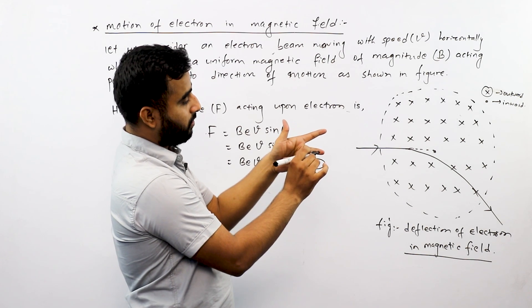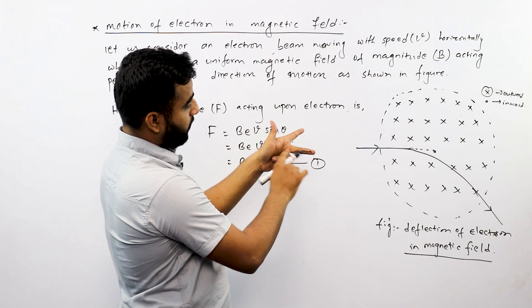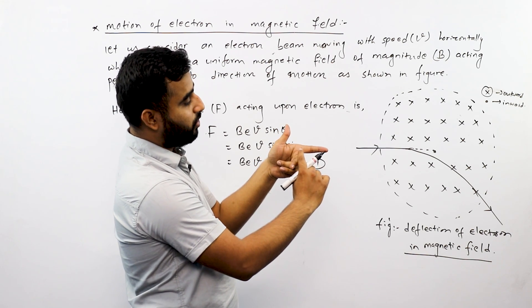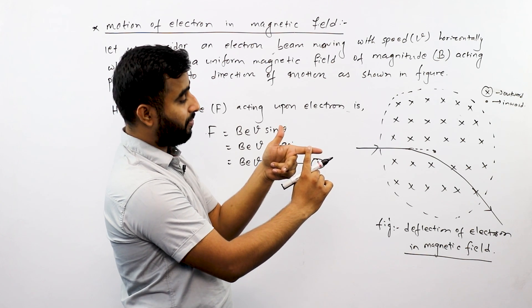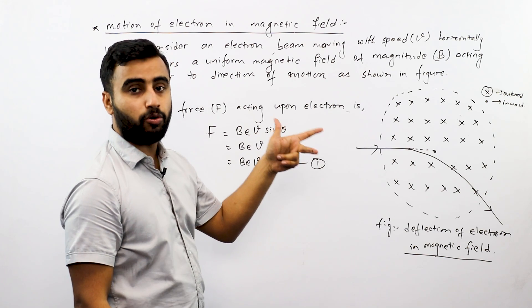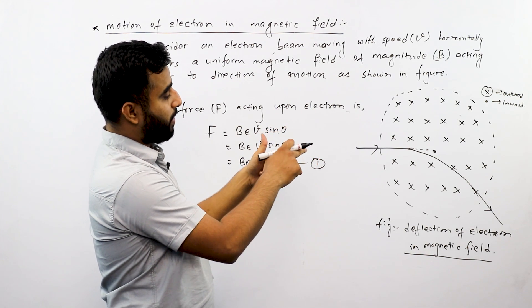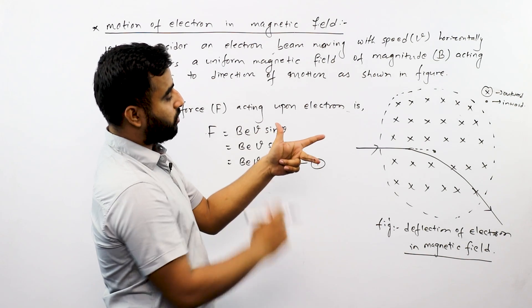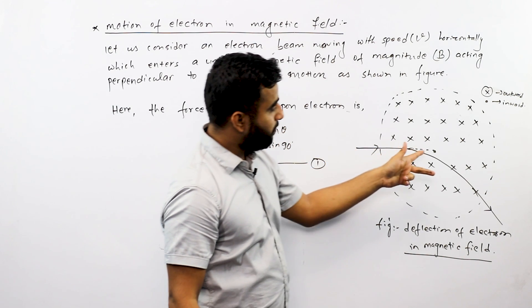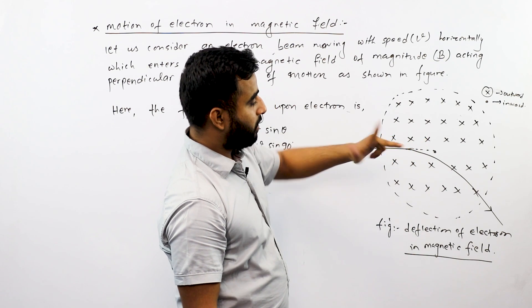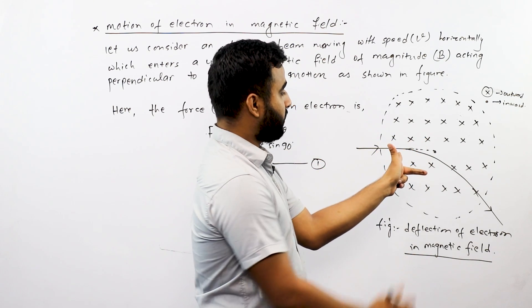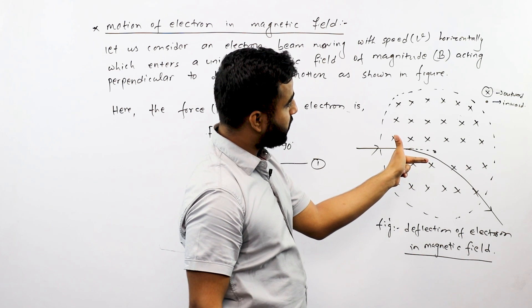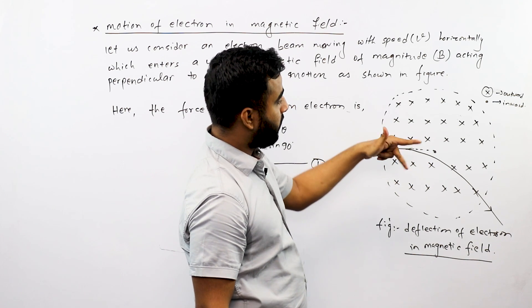This is the motion of charge particles. This is the direction of the magnetic field. This is the Lorentz force. The force acts on the charge particle. This is the direction of the charge particles, and this is the resulting force.